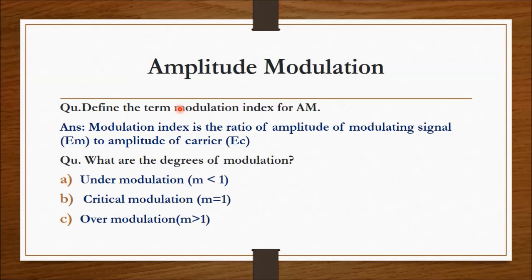The next question on amplitude modulation practical is: define the term modulation index for AM. The modulation index is the ratio of the amplitude of the modulating signal (E_m) to the amplitude of the carrier. What are the degrees of modulation? First, under-modulation: m less than 1.